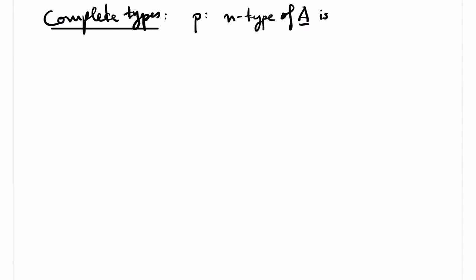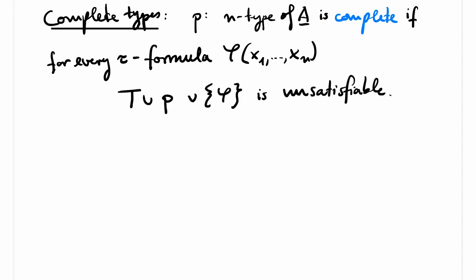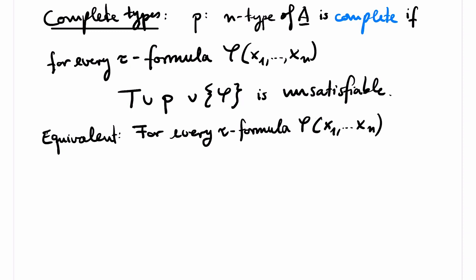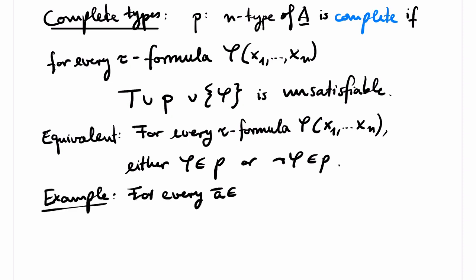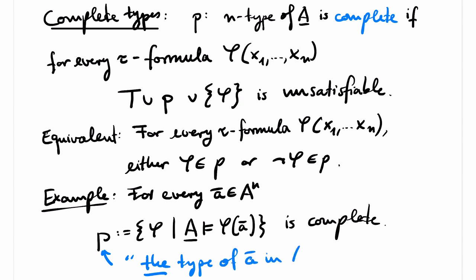Particularly important for us will be complete types. An n-type is called complete if it is maximal in the following sense: for every tau formula phi with free variables x1 up to xn, if we add phi to T union p, the resulting set of formulas is no longer satisfiable. Equivalently, for every tau formula phi with free variables x1 up to xn, either phi is in p or the negation of phi is in p. Complete types arise naturally: if you have an n-tuple of elements of our structure A, then the set of all first-order formulas phi satisfied by this tuple in A is a complete type, also called the type of the tuple.